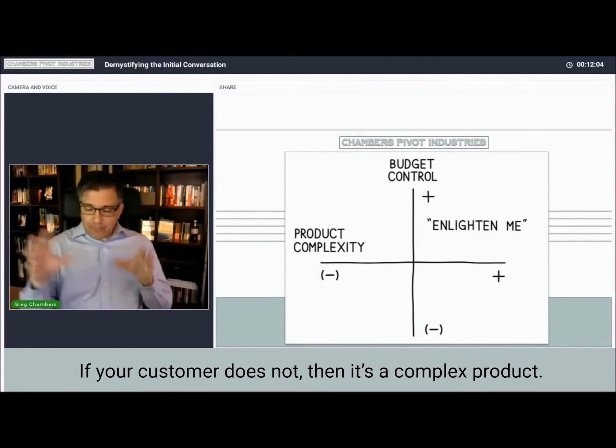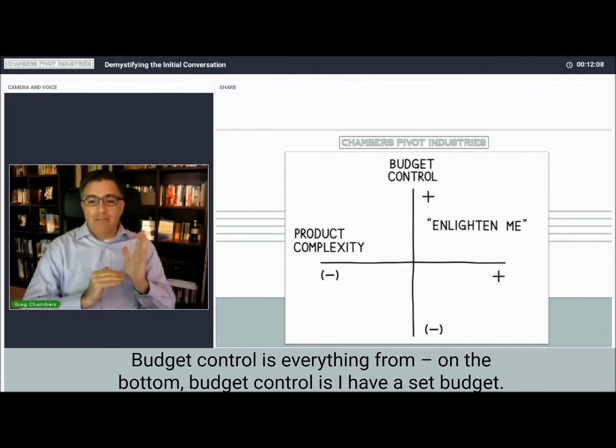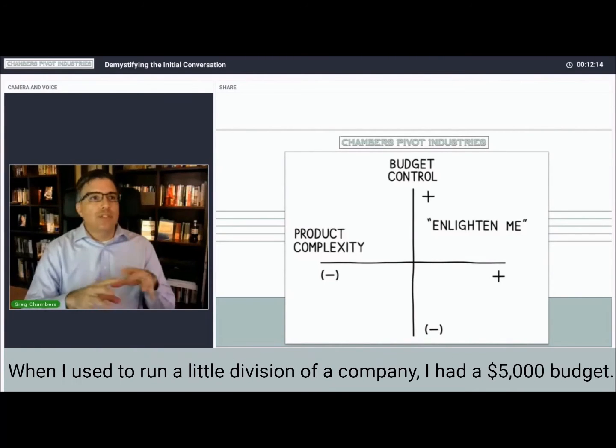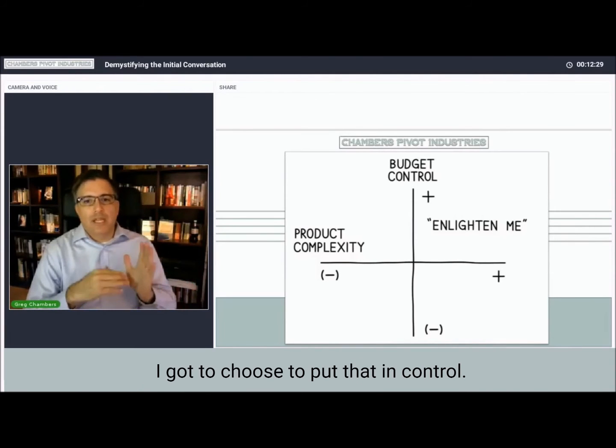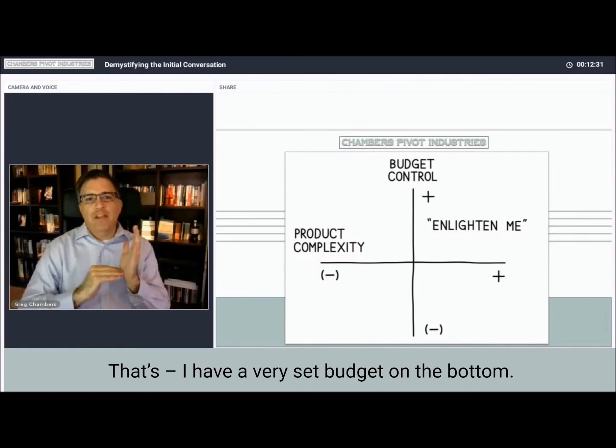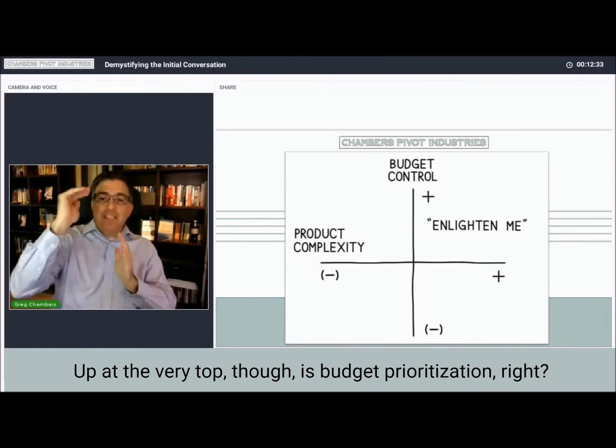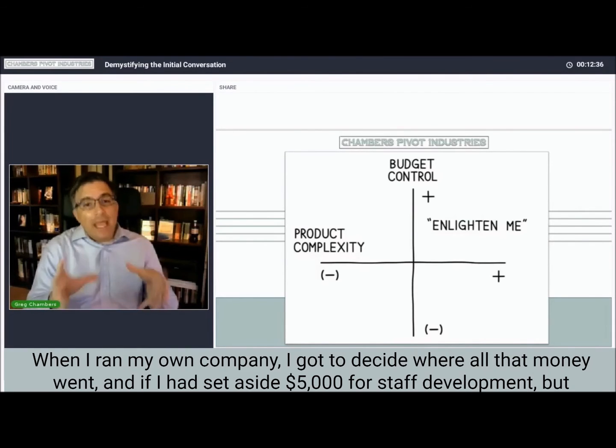Budget control ranges from on the bottom, where I have a set budget. When I used to run a little division of a company, I had a $5,000 budget. Nobody questioned this $5,000 that I would spend towards staff development, for instance. So I got to choose, I had control. That's a very set budget on the bottom.